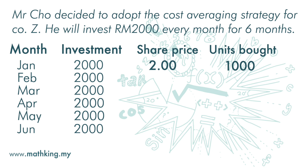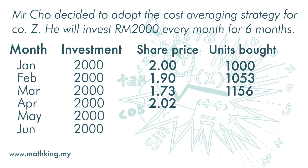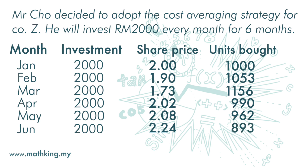In February, the price is RM1.90, so he buys 1,053 units. In March, the price is RM1.73, so he buys 1,156 units. In April, the price is RM2.02, so he buys 990 units. In May, the price is RM2.06, so he buys 971 units. In June, the price is RM2.24, so he buys 893 units.